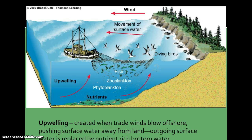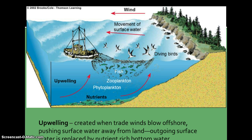Upwelling is created when trade winds blow the surface water away from the coast. The trade winds are near the equator and you can see they're moving the water away. When that happens, the colder nutrient-rich water from the bottom rises to the surface — or upwells — to take its place. This is very important because it brings nutrients to the surface that the fishing industry really depends on to provide nutrients for fish in the fish nurseries.